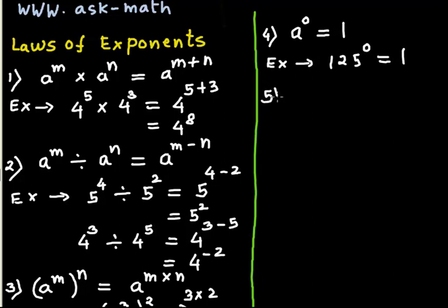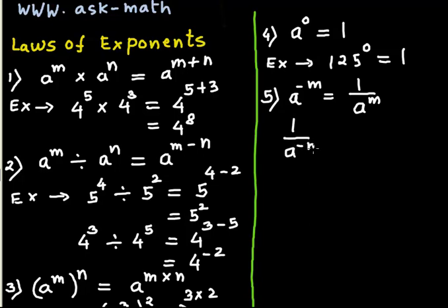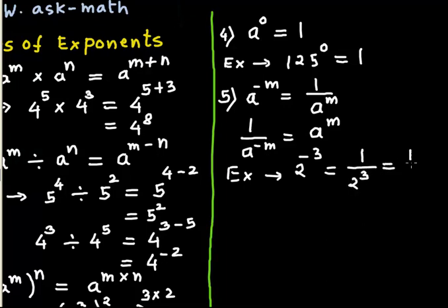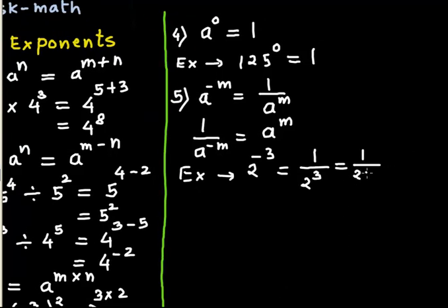The next law is: if the exponent is negative, then to make the exponent positive, you have to flip the number. And if the number is in the bottom, you bring it to the top to make the exponent positive. For example, 2 to the exponent negative 3 becomes 1 over 2 to the exponent 3, which is 1 over 2 times 2 times 2, which is 1 over 8.